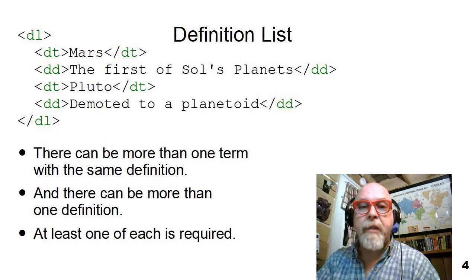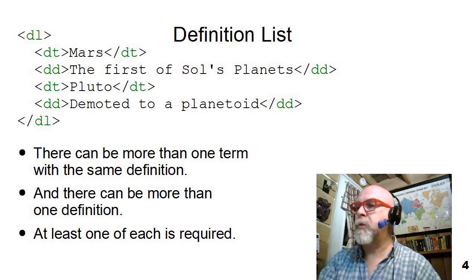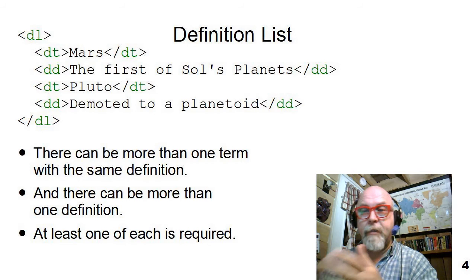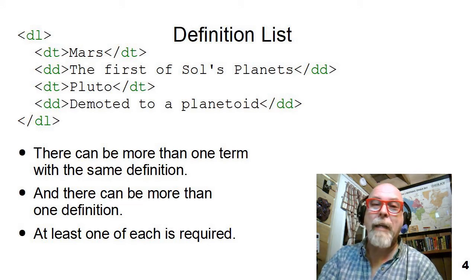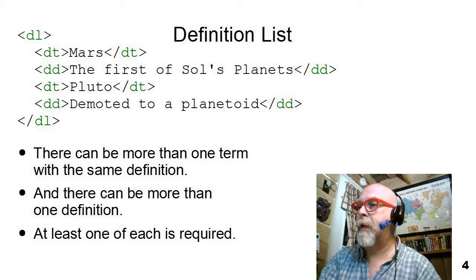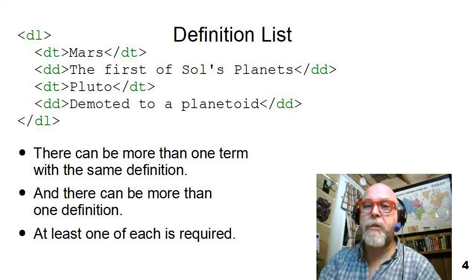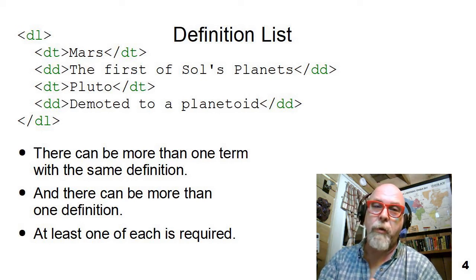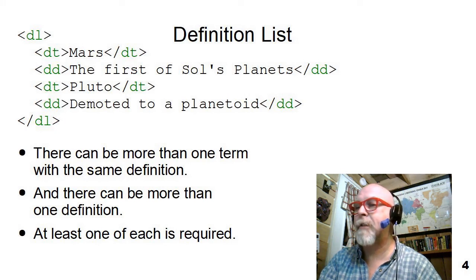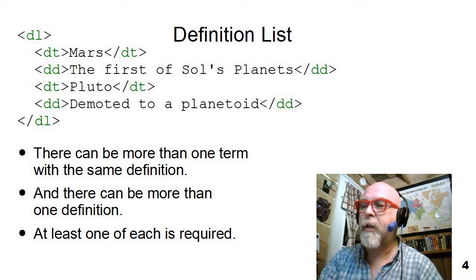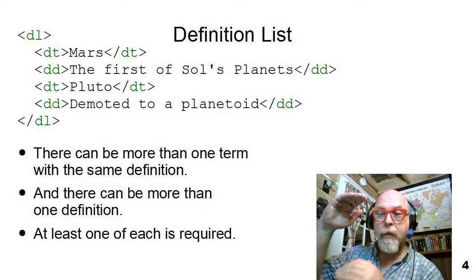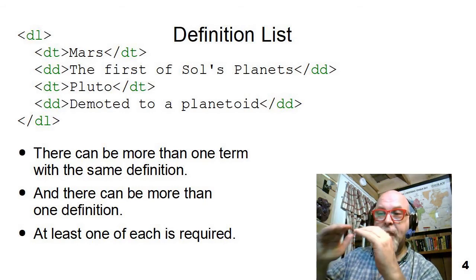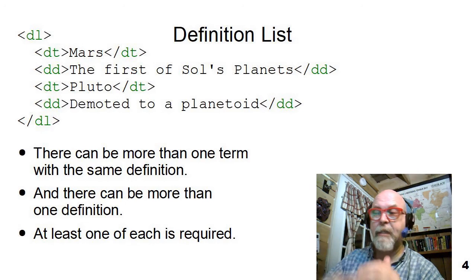Here's an example of a simple definition list with two terms and two definitions. Mars, the first of the solar planets—actually, that's Mercury. Oops, I guess I don't know my cosmology very well. And there's Pluto, which has been demoted to a planetoid and is no longer a planet. I ought to fix that for the next generation of this presentation. But you can see how the DL contains DTs and DDs and DTs and DDs.